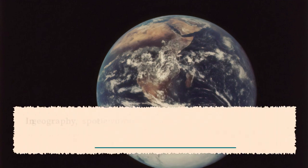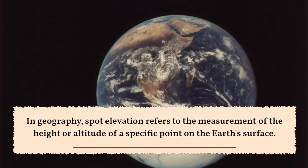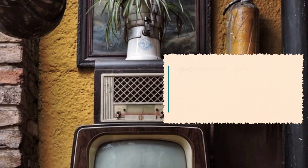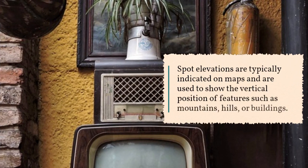In geography, spot elevation refers to the measurement of the height or altitude of a specific point on the Earth's surface. Spot elevations are typically indicated on maps and are used to show the vertical position of features such as mountains, hills,